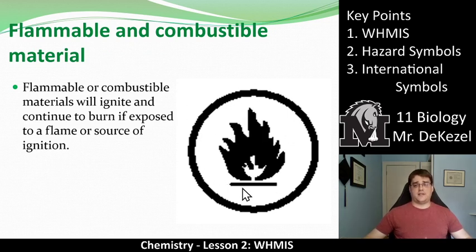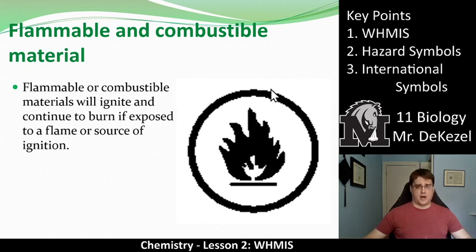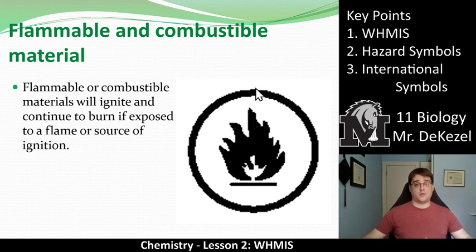Flammable or combustible material uses this symbol — it's pretty clear, there's a little fire in a circle. Flammable or combustible materials will ignite and continue to burn if exposed to a flame or source of ignition. Remember to pause this and make sure you write everything down. You can go back and listen afterwards as well.